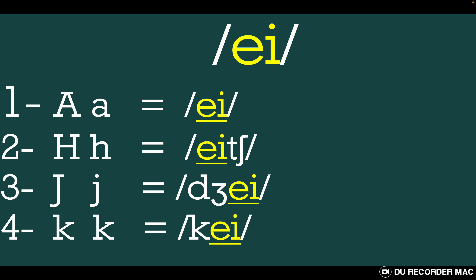We start with the first letter: A — repeat after me: a, a, a. The second letter is H — repeat after me: h, h, h. The third letter is J: j, j, j. The last one is K: k, k, k.